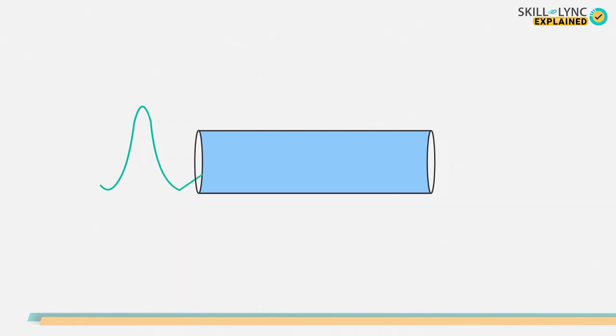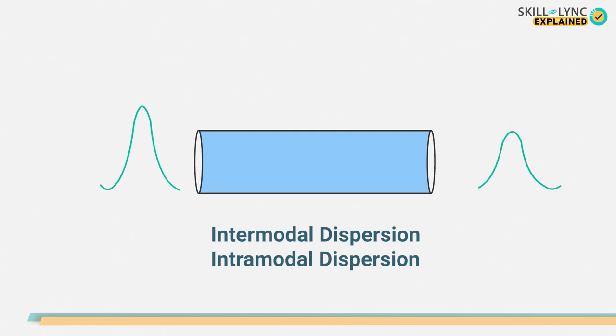When a signal is sent through the cable, it has a higher amplitude, and when it is received at the other end, the amplitude decreases. This happens because the pulse broadens as it travels through the fiber. Dispersion loss can be divided into two types: intermodal dispersion and intramodal dispersion.